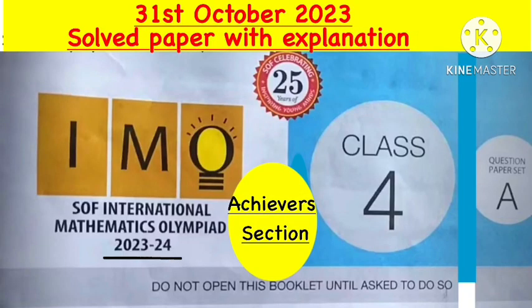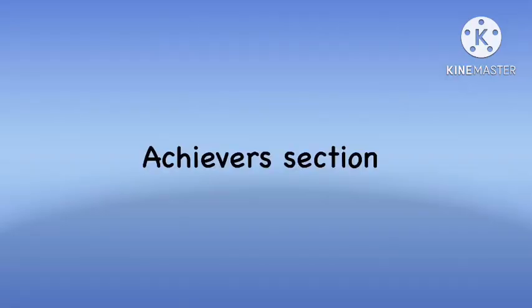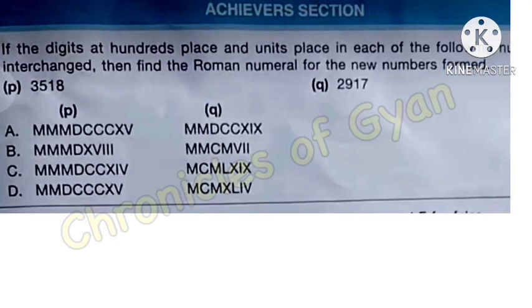Today we are going to solve the questions of the achiever section, that is question number 31 till 35, and each question carries two marks. Question 31: if the digits at hundreds place and units place in each of the following numbers are interchanged, then find the Roman numeral for the new numbers formed.